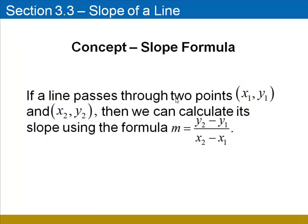If a line passes through two points labeled x1, y1, and x2, y2, then we can calculate its slope using the formula m equals y2 minus y1 over x2 minus x1. y2 minus y1 represents the rise, and x2 minus x1 represents the run.